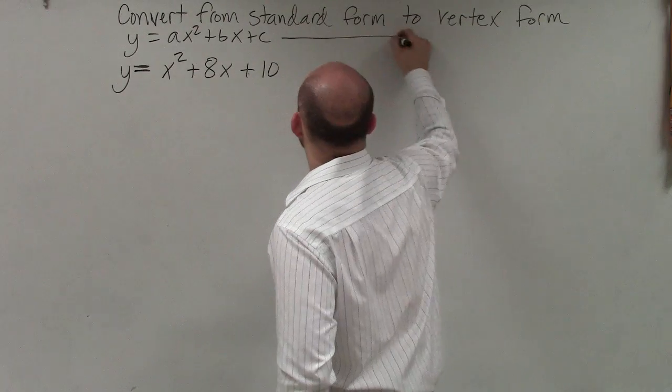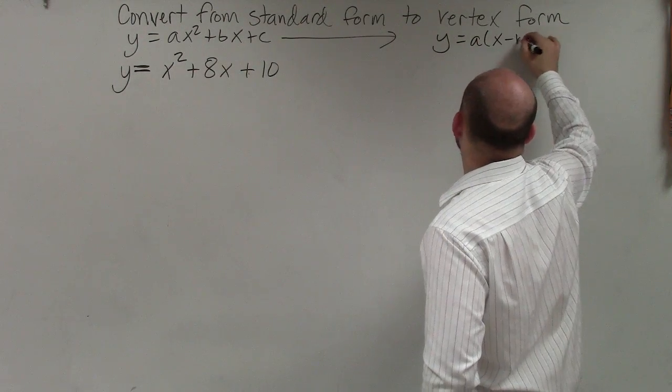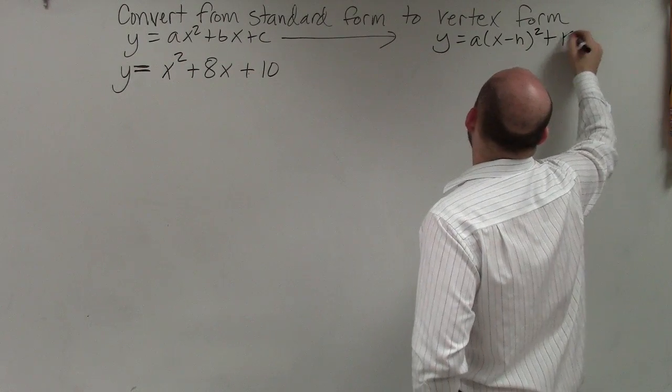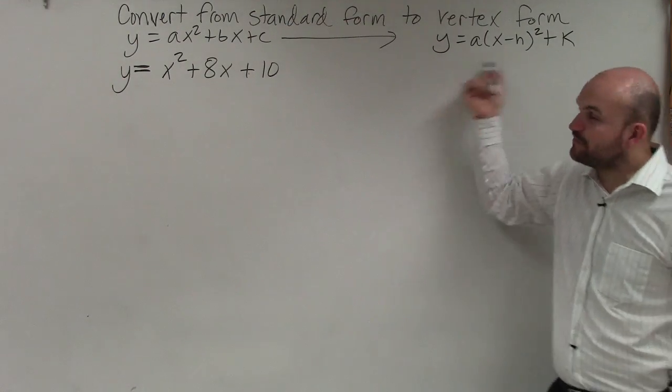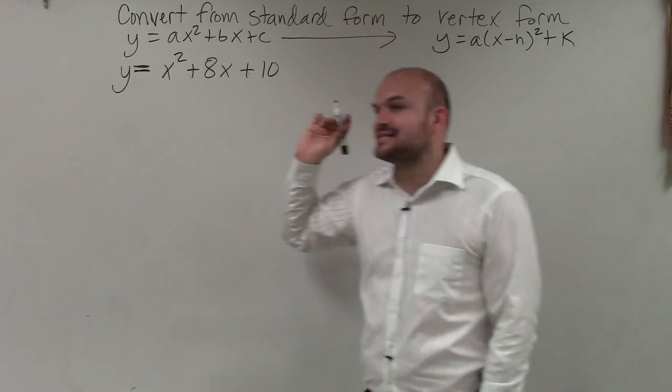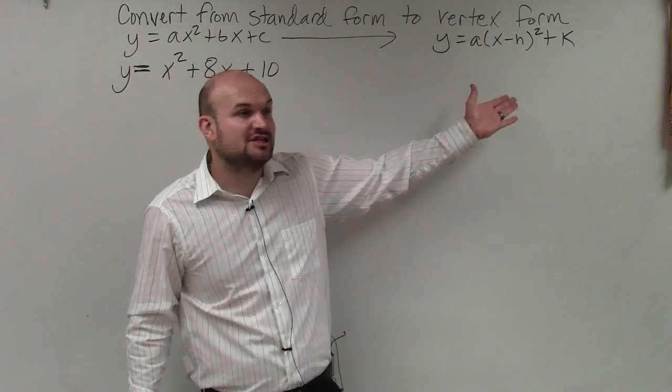If we're able to take this equation and write it in vertex form, then there's a lot less math that we really have to do. Because when it's in vertex form, we know that the axis of symmetry is just h equals k. We know the vertex is just h comma k.